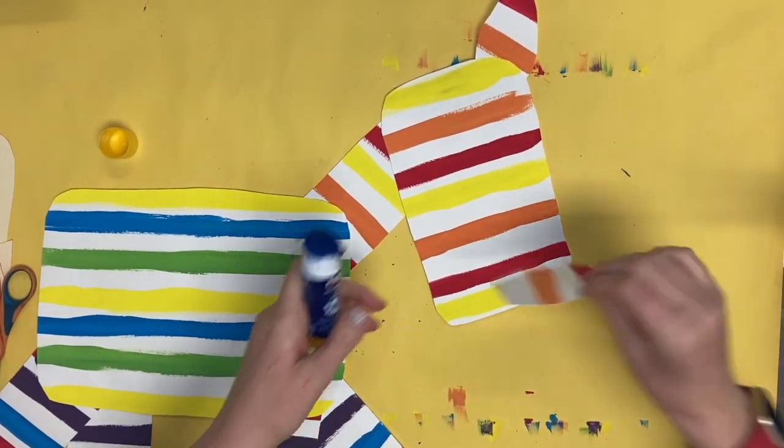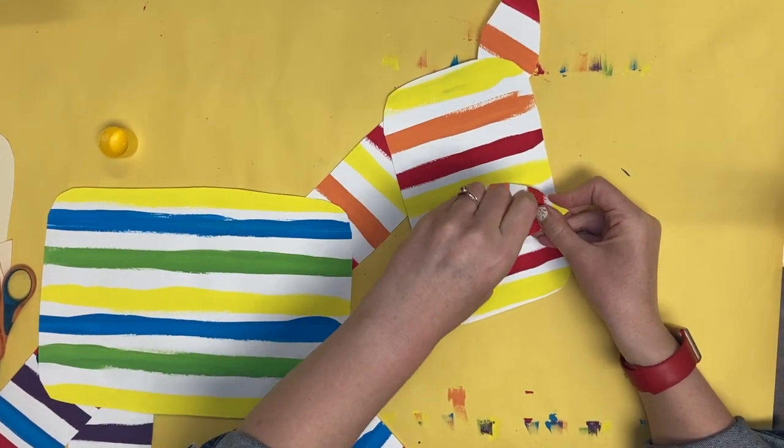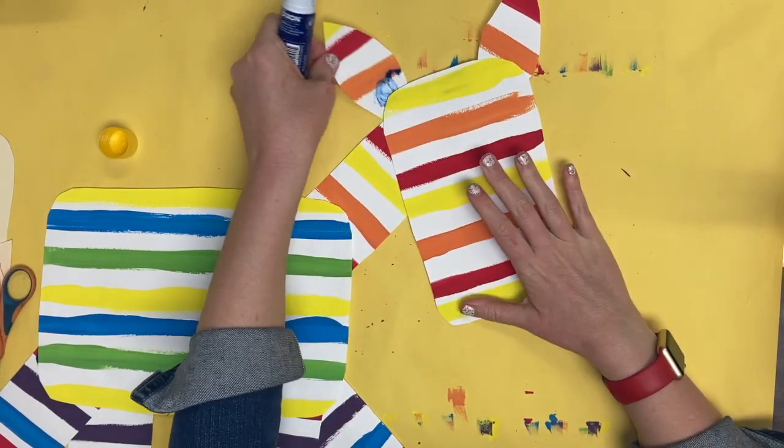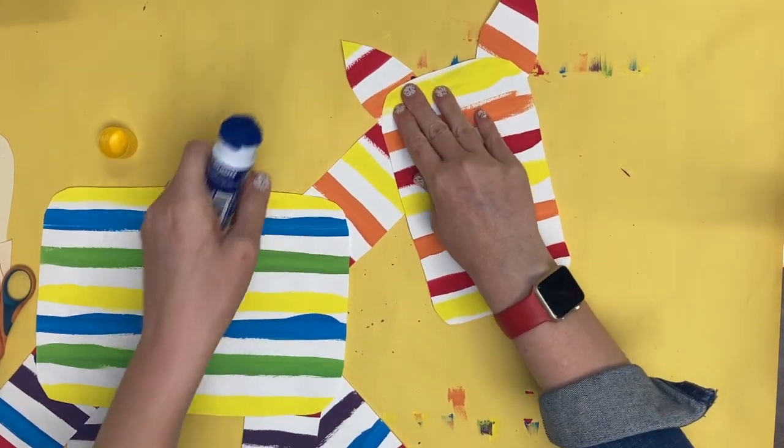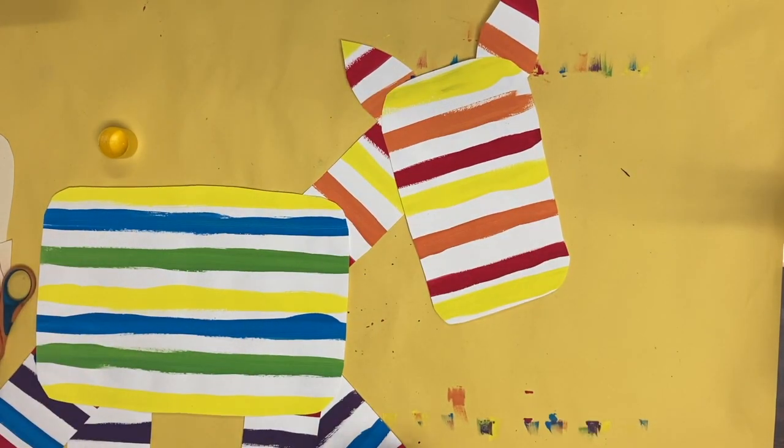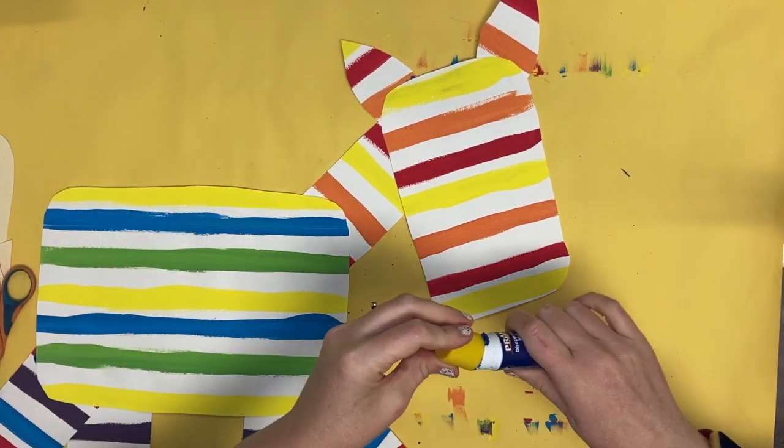A little glue under the ears. Last one. Glue it down. And I am all finished with putting the parts of the zebra together for today.